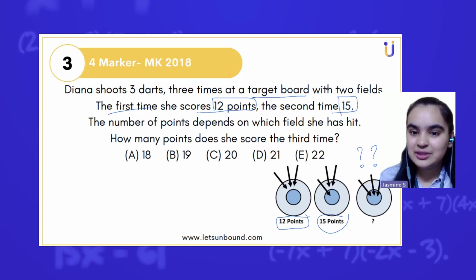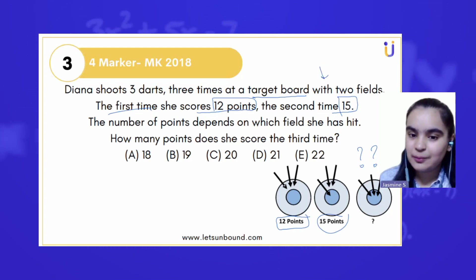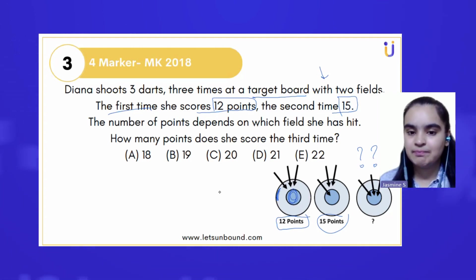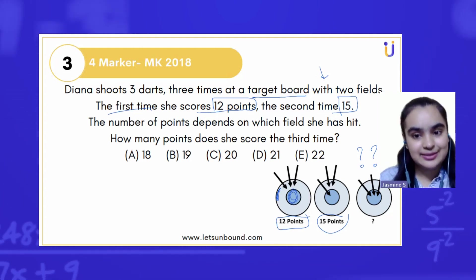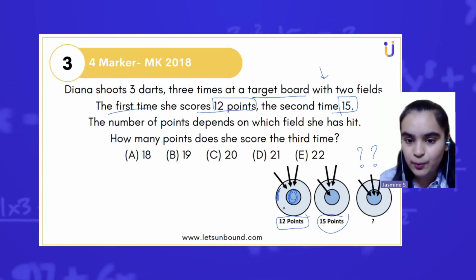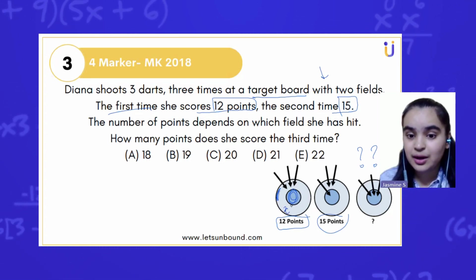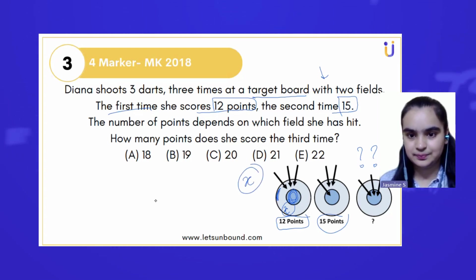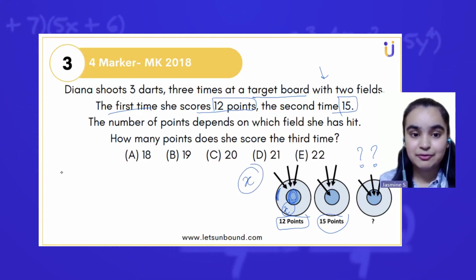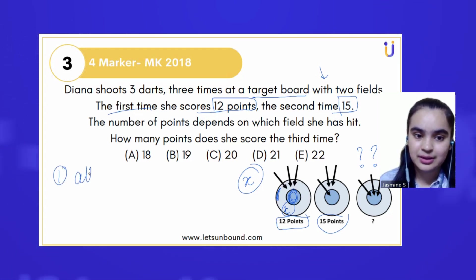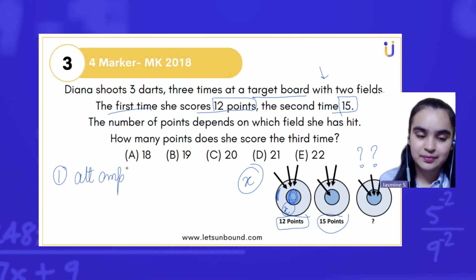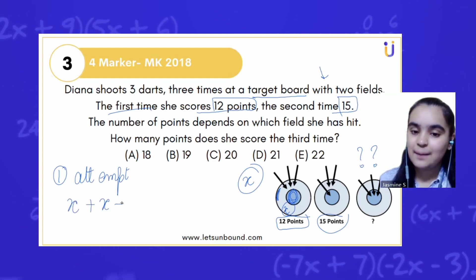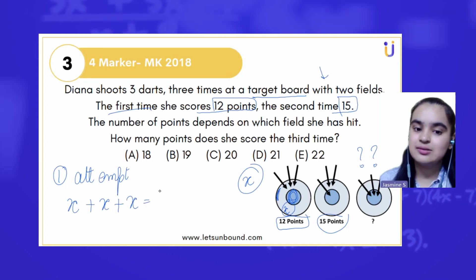In each of the target boards we have two fields — the light blue outer one and the dark blue inner one. Let's assume that whatever points she gets for the outer field is x points. For the first attempt we can say x plus x plus x equals 12.